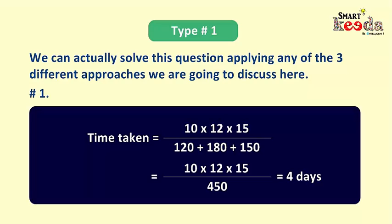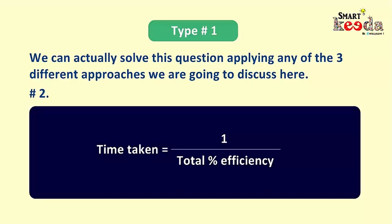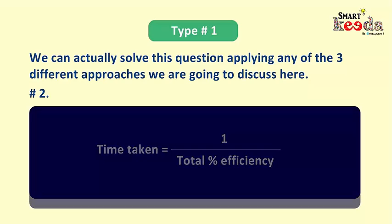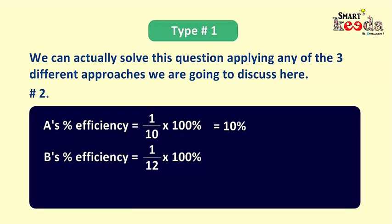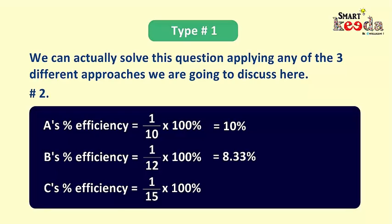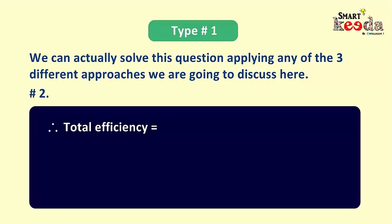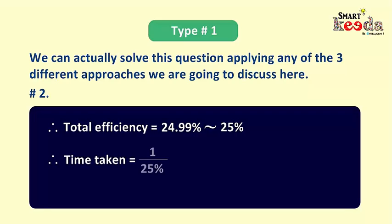The second approach is based on percentage efficiency: time taken = 1 / (total percentage efficiency). A's percentage efficiency = (1/10) × 100% = 10%. B's percentage efficiency = (1/12) × 100% = 8.33%. C's percentage efficiency = (1/15) × 100% = 6.66%. Total percentage efficiency = 24.99% ≈ 25%. Therefore, time taken = 1 / 25% = 4 days. This approach is good if you can quickly recall percentage values of fractions.